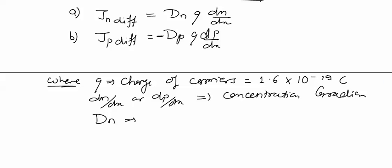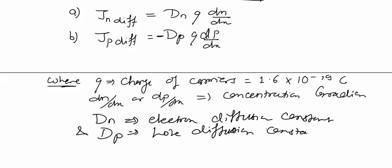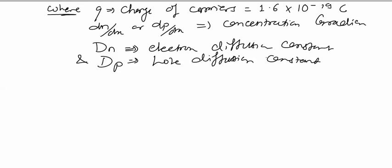D_n is called the electron diffusion constant and D_P is called the hole diffusion constant. This defines the current density in the material. Now we will solve some problems on basic semiconductors.